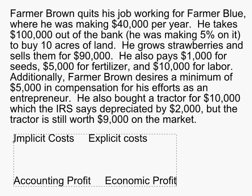He also pays one thousand dollars for seeds, five thousand dollars for fertilizer, and ten thousand dollars for a worker to help him pick the strawberries. Additionally, Farmer Brown desires a minimum of five thousand dollars in compensation for his efforts as an entrepreneur owning this business — that's over and above any other labor effort he puts in, just five thousand dollars for taking a risk and working as his own boss. It's annoying; it's harder than working for someone else.